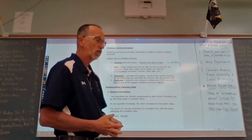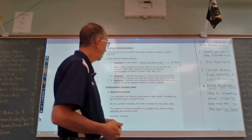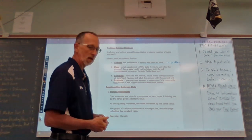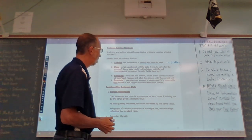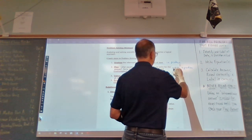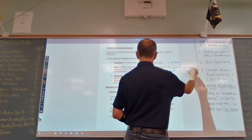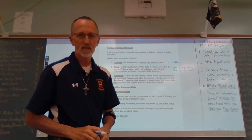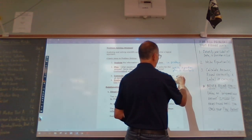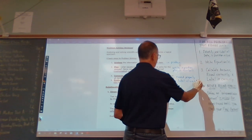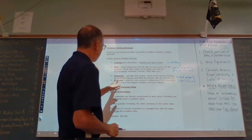The second step is Plan — what equation or equations will the data fit into to solve the answer? Some data might not be listed; it could be inferred, a mathematical constant, or a piece of information from the periodic table. In the planning part, we write the equation and plug in the numbers. The third step is Calculate your answer — round properly and label with the unit.